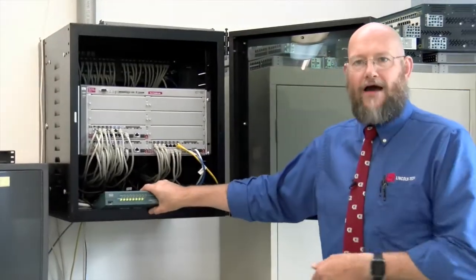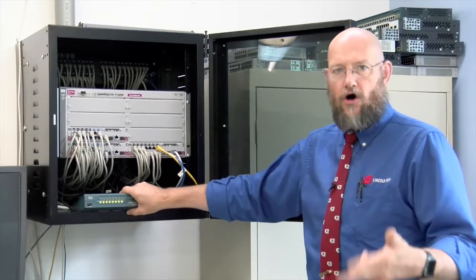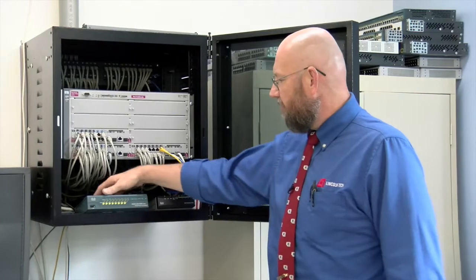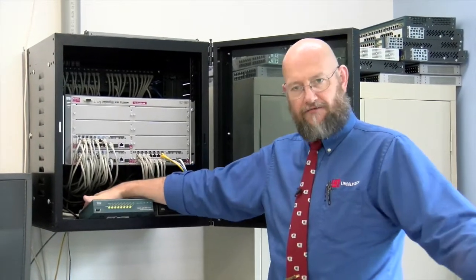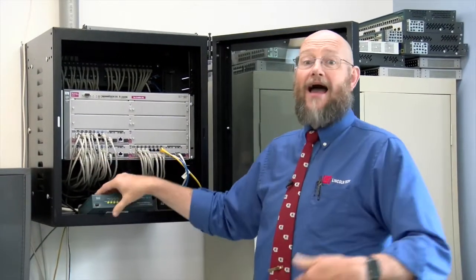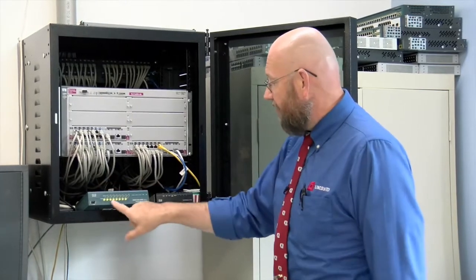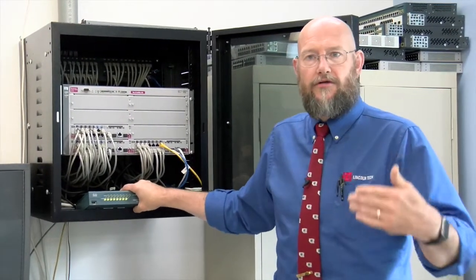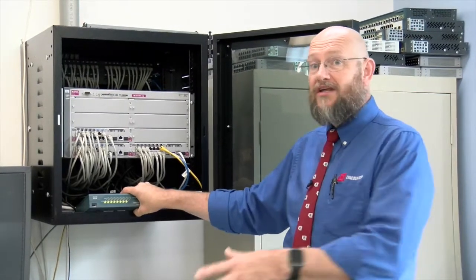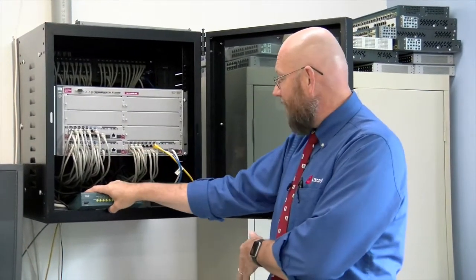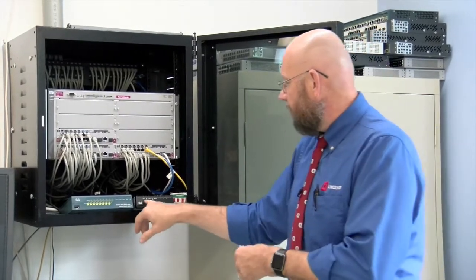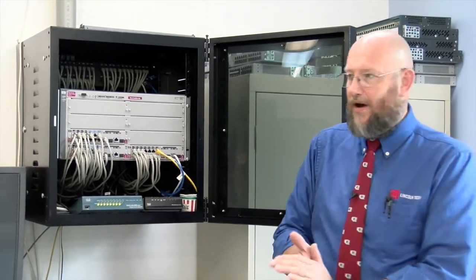This here is a SOHO router, small office, home office router. And what we can do is on port zero would be your public facing of your firewall. So that would be your outside, that would be the internet. And then inside you can have seven ports either going to different devices on the same network or different networks. So we have multiple options with this guy. And then this here is another firewall where you can have multiple ports and multiple firewalls as well.